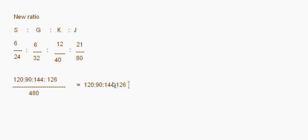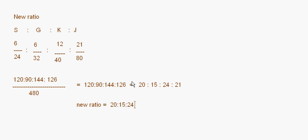All of them are divisible by 6, so this becomes 20 : 15 : 24 : 21. The answer will be 20 : 15 : 24 : 21.